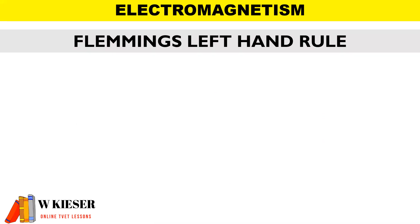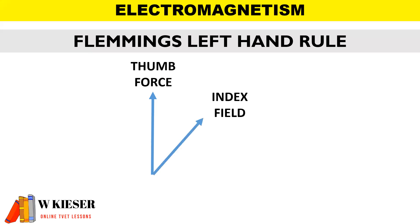According to Fleming's left-hand rule, the thumb points in the direction of force, the index finger in the direction of magnetic field, and the middle finger in the direction of current.